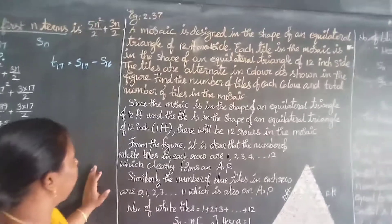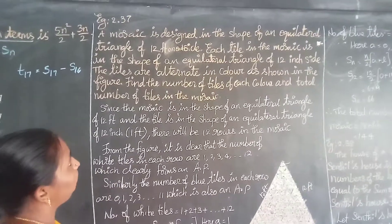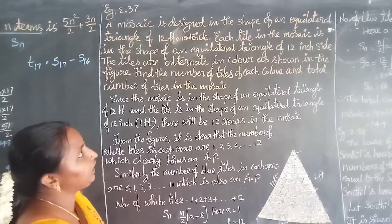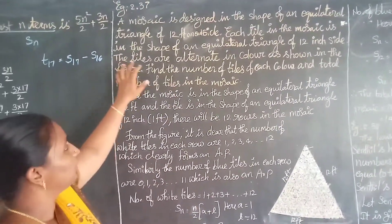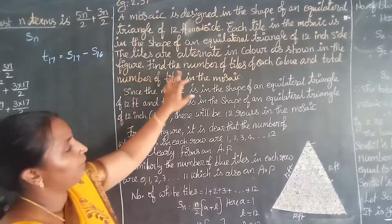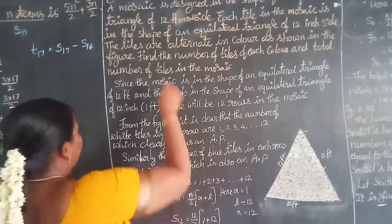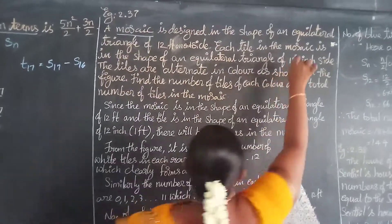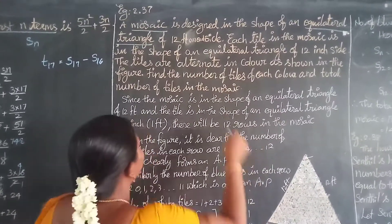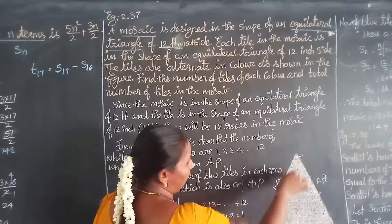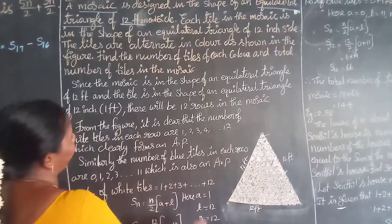Moving on to example 2.37. A mosaic is designed in the shape of an equilateral triangle, 12 feet on each side. Each tile in the mosaic is also in the shape of an equilateral triangle of 1 foot on each side. The tiles alternate in colour as shown in the figure. We need to find the number of tiles of each colour and the total number of tiles in the mosaic.